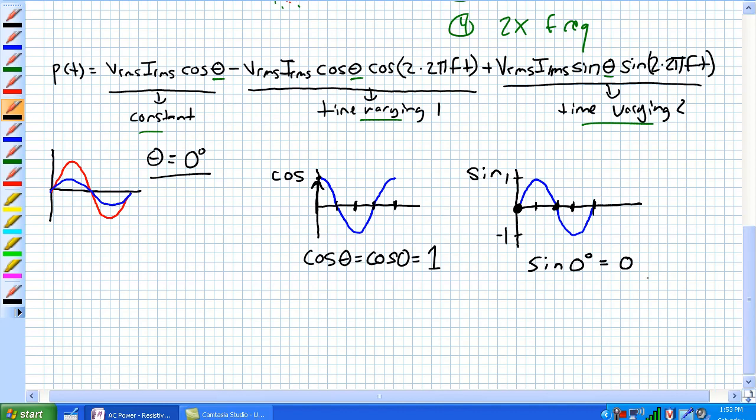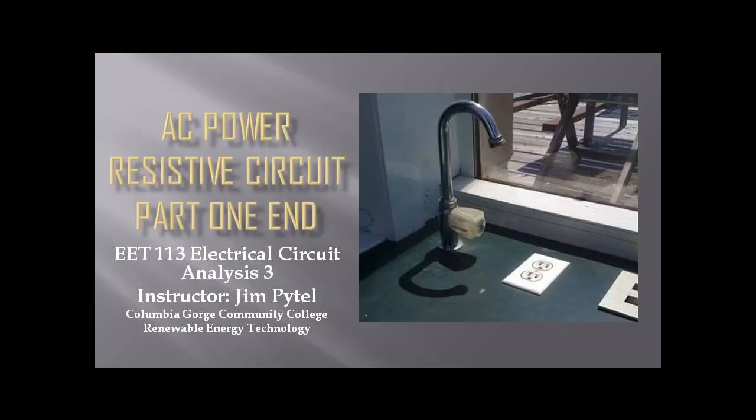This is going to seriously simplify what's going on in this giant equation up here. Let's substitute cosine zero equals one, and sine zero equals zero. Let's simplify this equation right here.